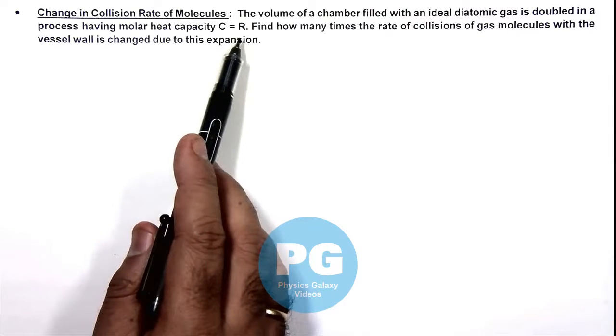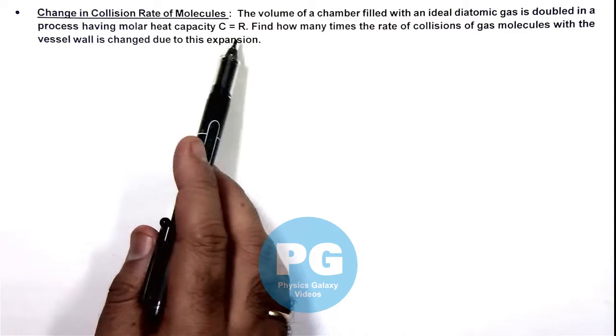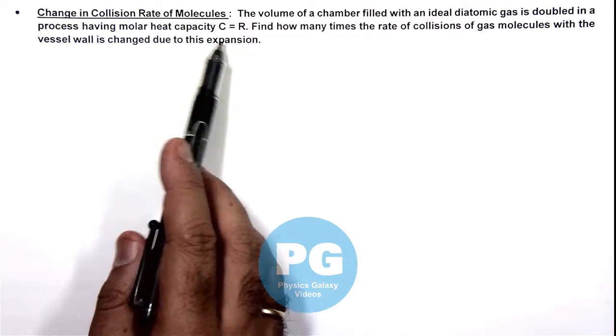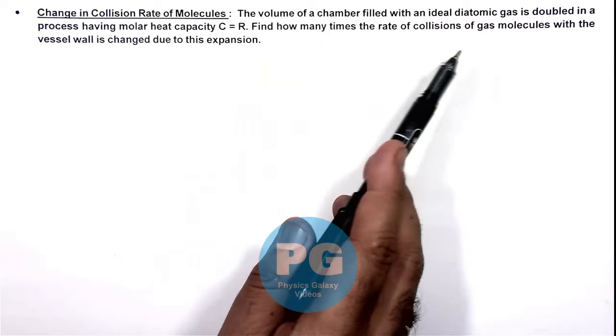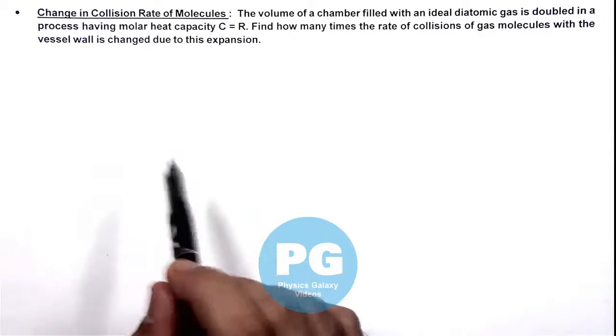Here we can see as C is a constant, it is considered as a polytropic process. And we are required to find how many times the rate of collision of gas molecules with the vessel wall is changed due to this expansion.